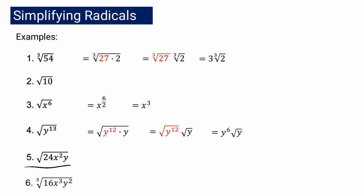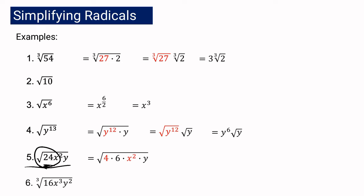Let us have example number 5. We have the square root of 24x squared y. We are going to factor out 24, finding a factor that is a perfect square since our index is 2. The exponent 2 on x is equal to our index, so it can already be simplified. The y has exponent 1, which is less than the index 2, so it is already in simplest form. The factors of 24 are 4 and 6, where 4 is the perfect square. The x squared does not need further factoring since 2 is divisible by the index 2.